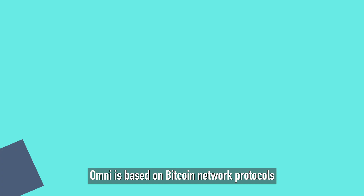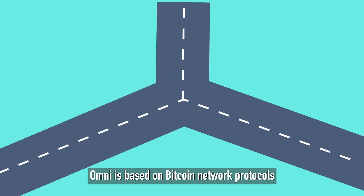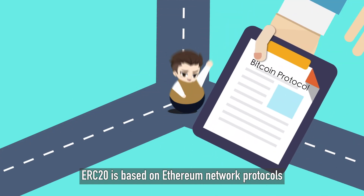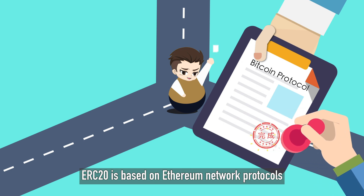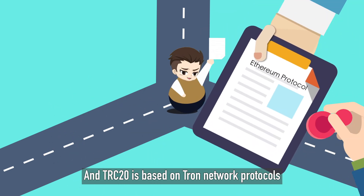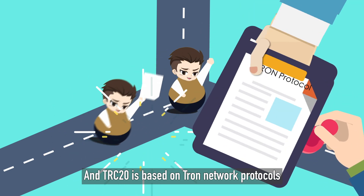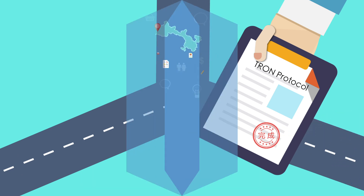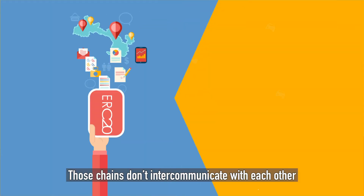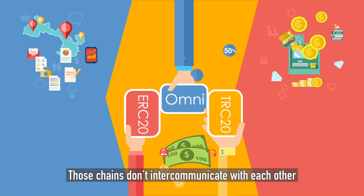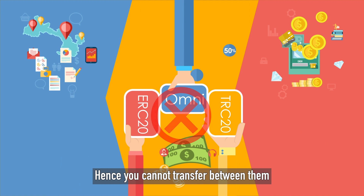Omni is based on Bitcoin network protocols, ERC-20 is based on Ethereum network protocols, and TRC-20 is based on TRON network protocols. Those chains don't intercommunicate with each other, hence you cannot transfer between them.